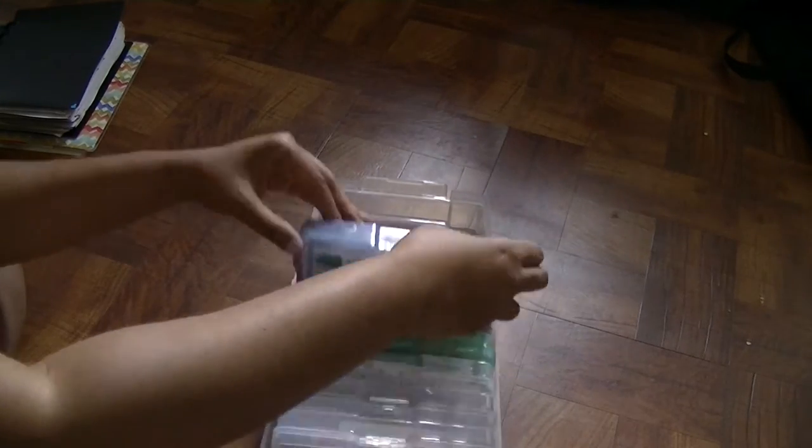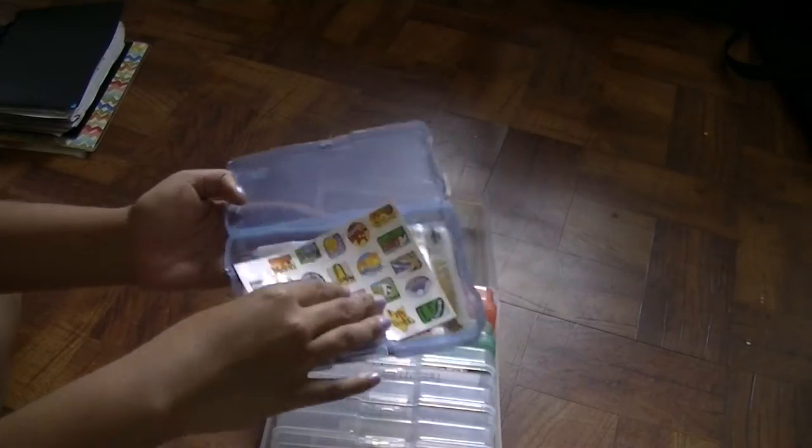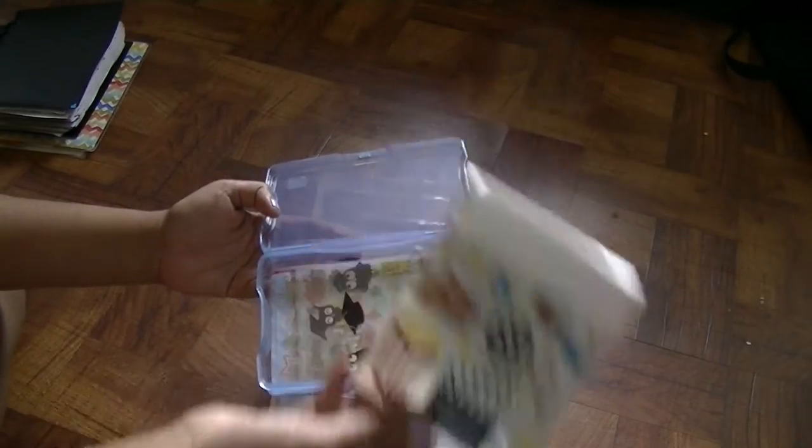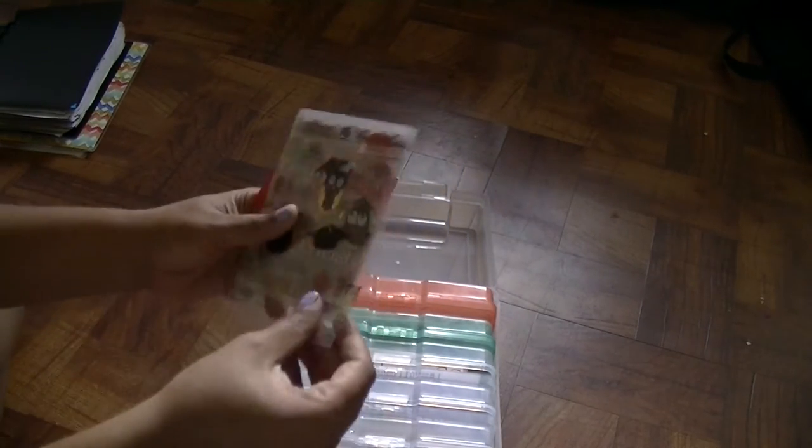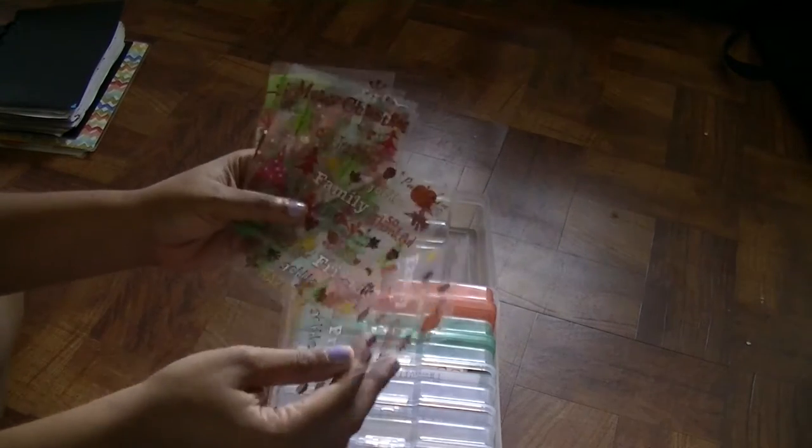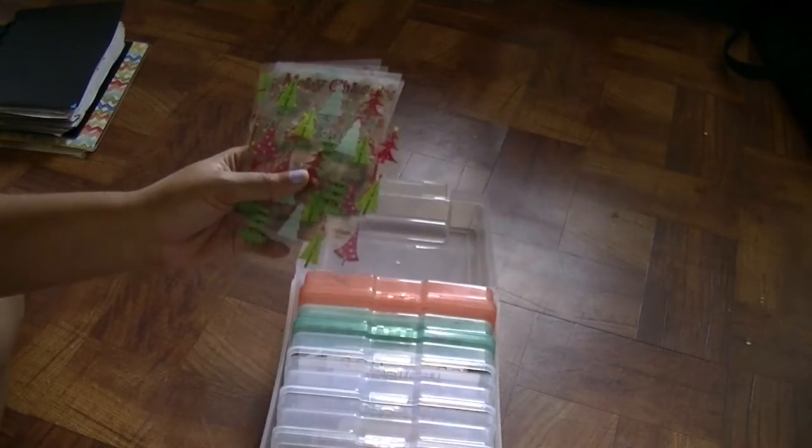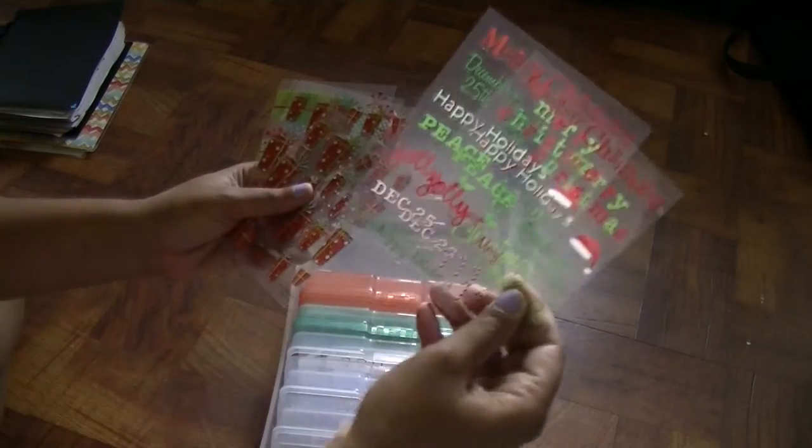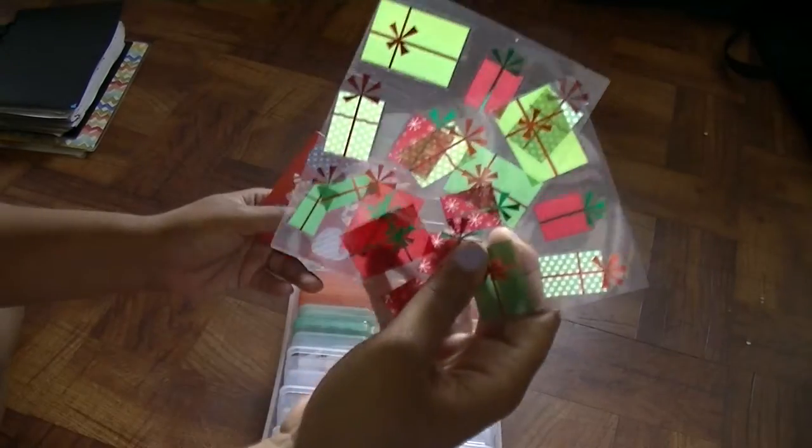Then in this blue one I keep my seasonal stickers. So I have this one which has dates on it, this movie one from Hobby Lobby. I have this graduation one which I used in June. Then I have this Thanksgiving one, and I love these sheets from Hobby Lobby because it gives you two. Then I also have these Christmas tree ones, this one that says Merry Christmas.